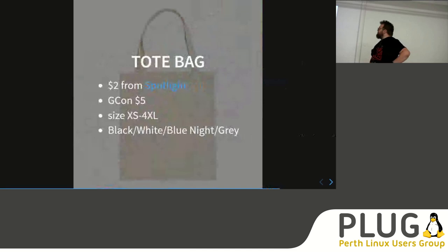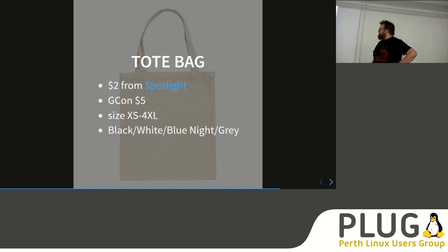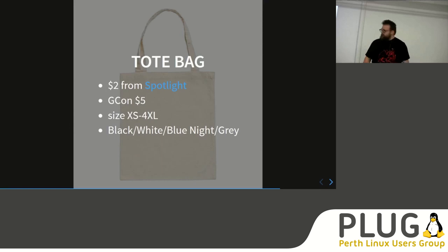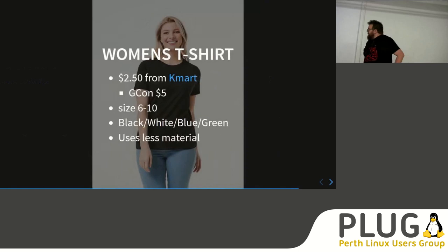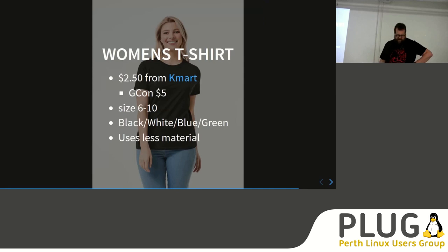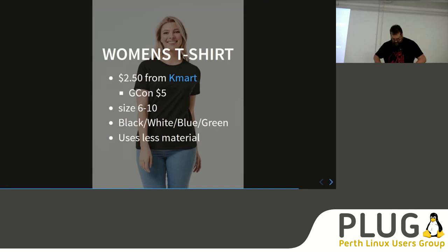One of the other things we printed on was tote bags. The cheapest we found was about $2 from Spotlight — quite good for just giving it a try. We on-sold them for $5, making a small profit and also covering some of the vinyl cost for people who attended the convention. If you want to print on a women's t-shirt, those have a little less fabric and tend to be cheaper — you can get one for about $2.50 from Kmart. We sold those on for $5 as well, and they come in various sizes. The cheap t-shirts only come in a few colors, but they're quite good for doing a test print.